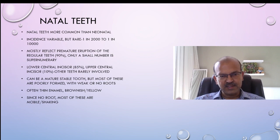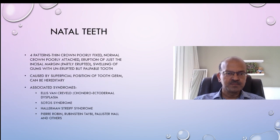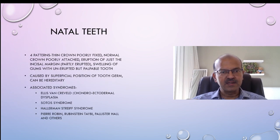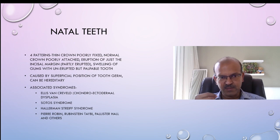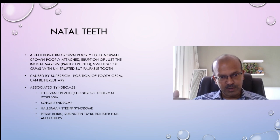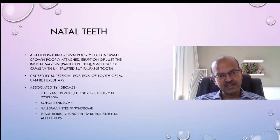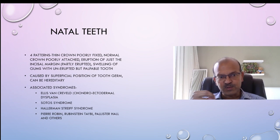The enamel is often thin and is brownish or yellow, and there are four patterns. We can have a thin crown which is poorly fixed, we can have a normal crown which is poorly attached, and we may just have the incisal margin erupted. These might evolve into more normal teeth because it's partly erupted and it continues erupting with time.